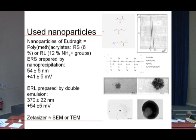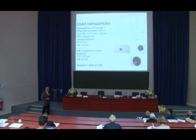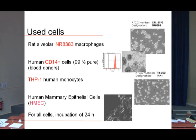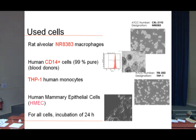The zeta size data are in accordance with electron microscopy, whether scanning or transmission. The cell types used in this study were three kinds of macrophages and monocytes: rat alveolar NR8383 macrophages, human CD14-positive cells that are more than 99% pure obtained from blood donors, THP-1 human monocytes from ATCC, and human mammary epithelial cells — not macrophages, but epithelial cells.